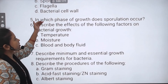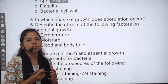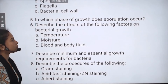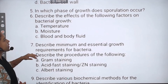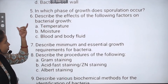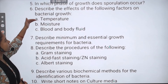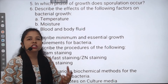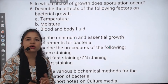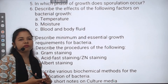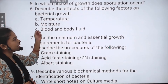The next question is: in which phase of growth does sporulation occur? Then, describe the effect of the following factors on bacterial growth: the effect of temperature on bacterial growth, and the effect of moisture on bacterial growth. You have to describe all these factors.